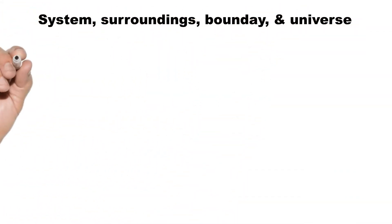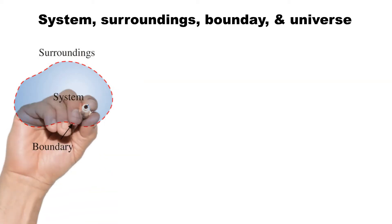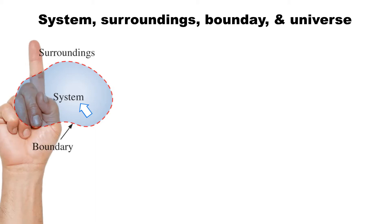The system is the part of the world in which we have a special interest. In other words, a system is defined as a quantity of matter or a region in space chosen for study. It may be a reaction vessel, an engine, an electrochemical cell, a biological cell, and so on. The mass or region outside the system is called the surroundings.